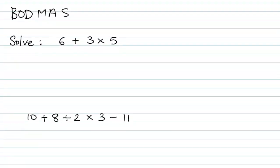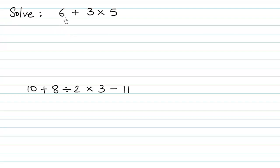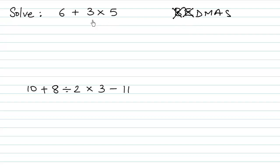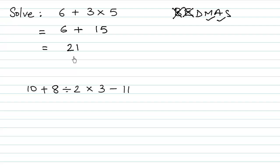So let us solve the first example: what is 6 plus 3 multiplied by 5? Using BODMAS, there is no bracket and no exponential signs, but we have multiplication and addition. So first we carry out the multiplication: 3 times 5 is 15. Then we carry out the addition: 6 plus 15 is 21. So the answer is 21.